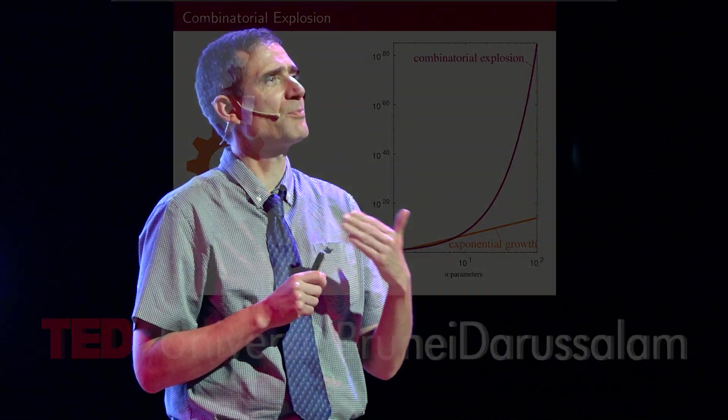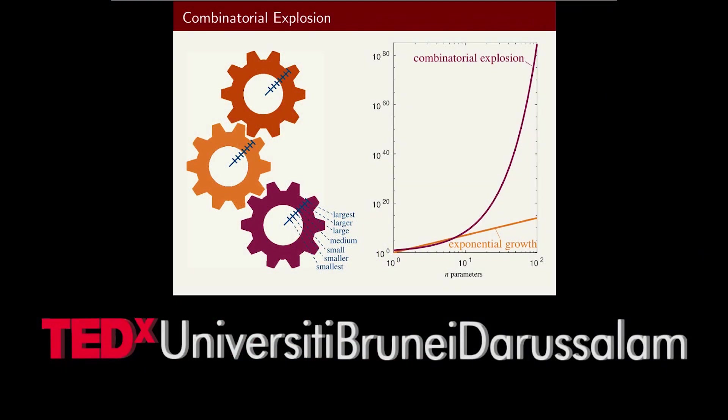In this graph on the right-hand side, I've shown you for comparison exponential growth. Exponential growth is already something that happens with a very powerful force — that's compound interest, how rich people get richer. That's very fast, but combinatorial explosion readily beats that.